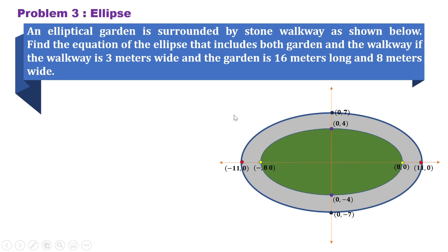In this problem, we are asked to get the equation of the outer ellipse. So we can say that a is equal to 8 plus 3, which is equal to 11. This would be the length of the semi-major axis. And b would be 4 plus 3, which is 7, and this would be the length of the semi-minor axis.